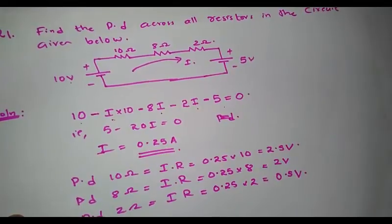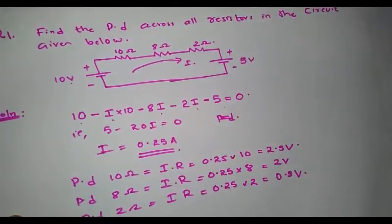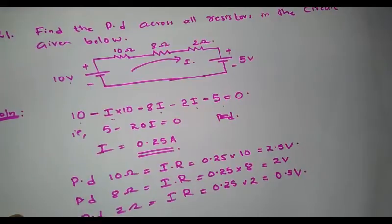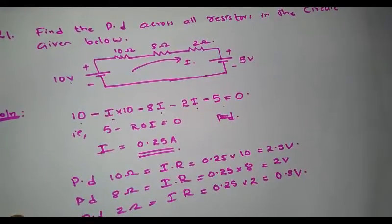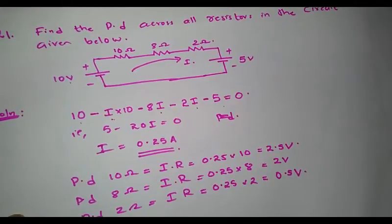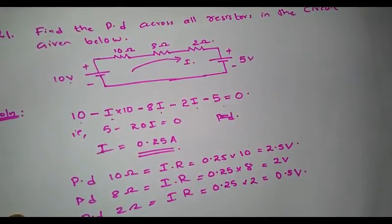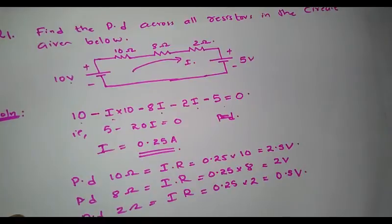This is a simple example of writing the mesh equation and solving for the value of current flowing through the circuit. From that, we can determine the potential difference across all resistor elements connected in the circuit. Similarly, we can also calculate the power consumed by different elements using the equation I²R. Thank you.